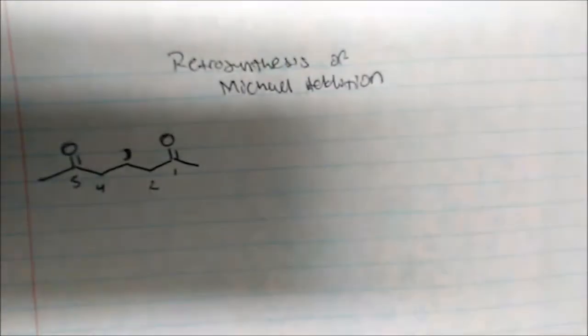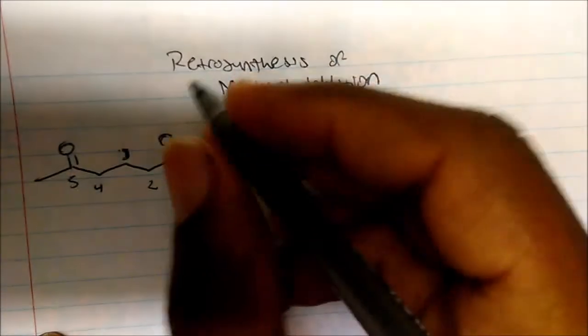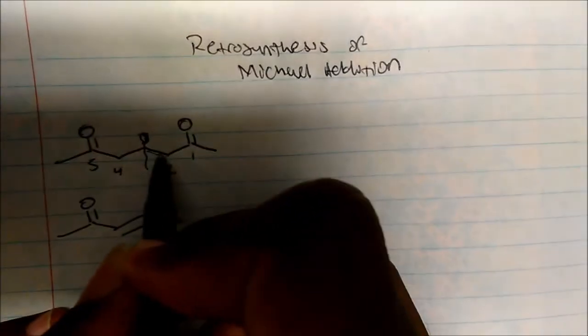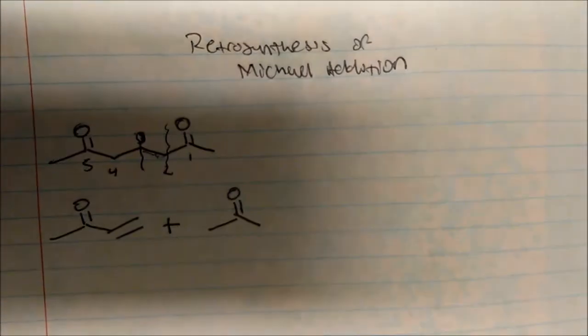We know that 1,5-dicarbonyls come from conjugate addition. If we're looking at this structure, we know it could come from breaking the bond here — so this has come from a conjugate ketone plus another compound. This is the bond that formed between this compound and the other two components.